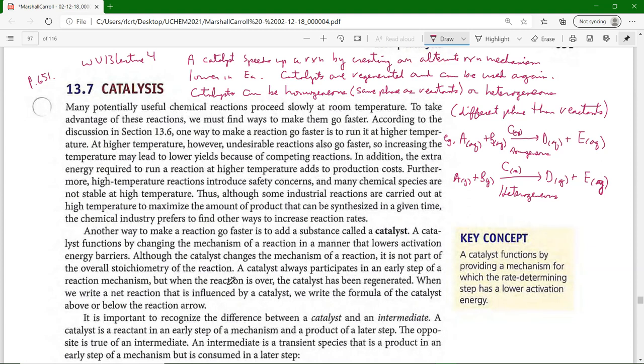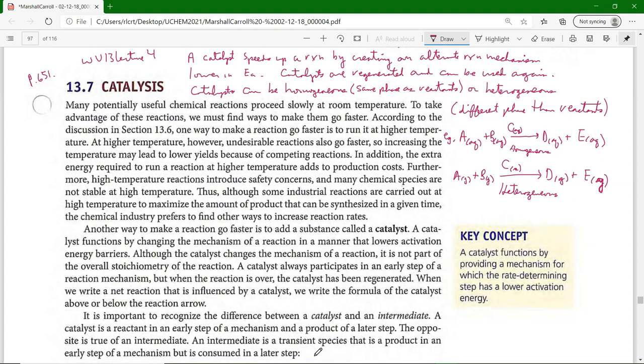I remember reading a book where it said catalysts don't participate in a reaction. I said, why would you write that? If a catalyst doesn't participate in a reaction, why would you ever put it in? Agreed, it is not part of the overall stoichiometry, but it does change the mechanism. The catalyst always participates in an early step, not necessarily the first step, but an early step of a reaction mechanism. But when the reaction is over, the catalyst is regenerated. When we write a net equation that's influenced by a catalyst, we write the formula above or below the reaction arrow. Remember, there's a difference between a catalyst and an intermediate. A catalyst is a reactant in an early step and a product of a later step, whereas an intermediate is a transient, that is a product in an early step but consumed in a later step.